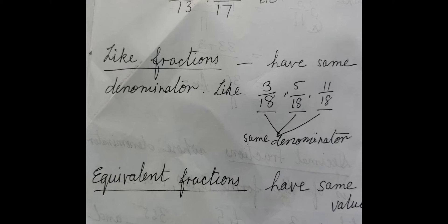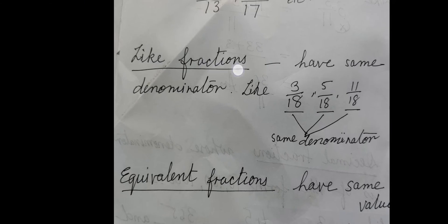And then the next kind of fraction is like fraction. Fractions which have the same denominator are called like fractions. Like you can see on the screen, three upon eighteen, five upon eighteen, eleven upon eighteen - they all have same denominator, that is eighteen. So they are called like fractions.